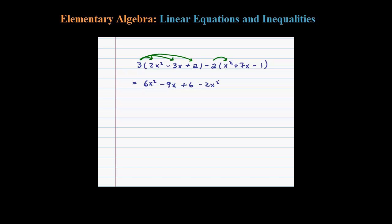Negative 2 times that 7 is negative 14x, and then finally negative 2 times negative 1 is plus 2. Now it's just a matter of adding up like terms.